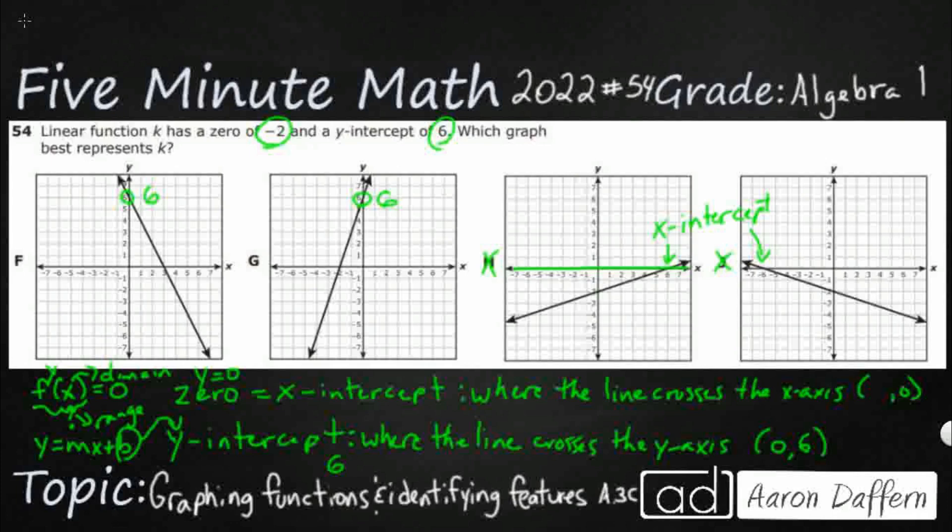And they already give it to us. They give us an x value of negative 2. So our x-intercept or our zero is simply going to be negative 2.